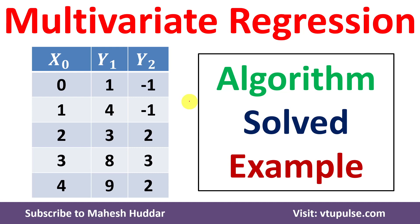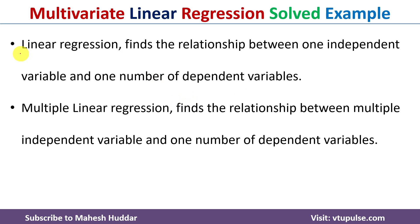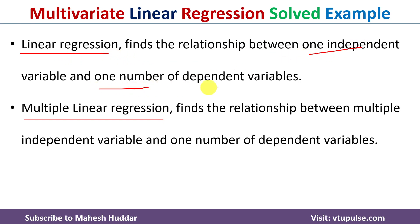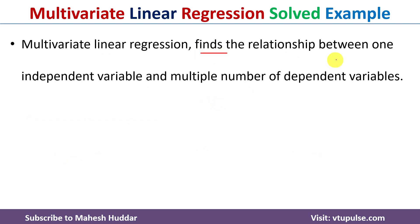Welcome back. In this video I will discuss multivariate linear regression algorithm with the help of a simple solved example. In the previous videos I discussed linear regression as well as multiple linear regression — links are given in the description below. Linear regression finds the relationship between one independent and one dependent variable. Multiple linear regression finds the relationship between multiple independent variables and one dependent variable.